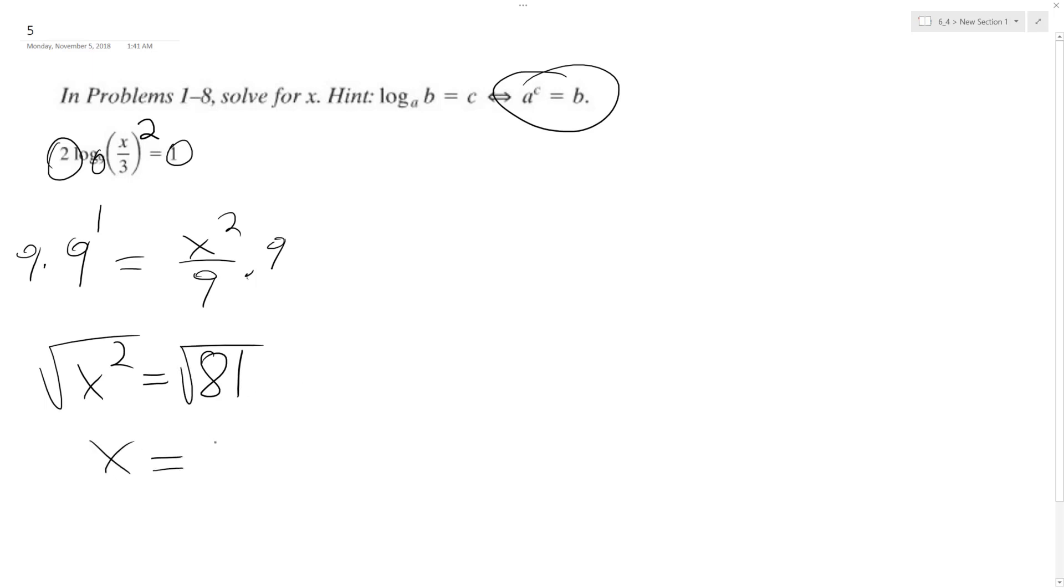And we get x is equal to plus or minus 9. But that can't be the case. It can only be positive 9. And the reason why is because you can't have a negative value inside a logarithm.